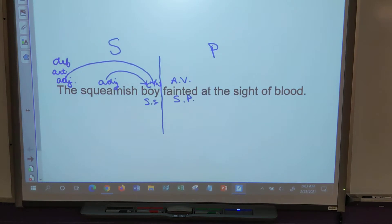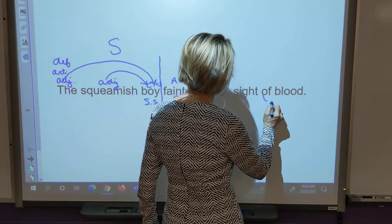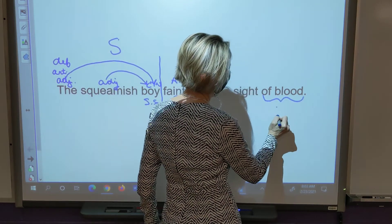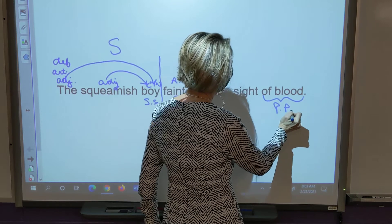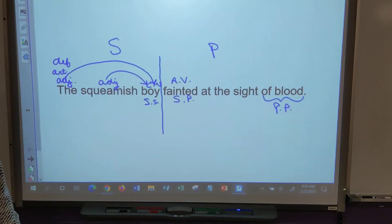Hannah? Of blood is a prepositional phrase. Of blood is a prepositional phrase. Very good. Something else, Cale?